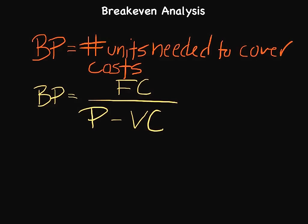Variable costs, contrary to fixed costs, vary based upon the number of units produced. If you produce five of a particular product, your variable costs are multiplied by five — they go up with every unit produced. Variable costs typically include direct materials, the materials that actually went into assembling the product, and direct labor, the people who assembled the product. The more you produce, the more labor time is required.